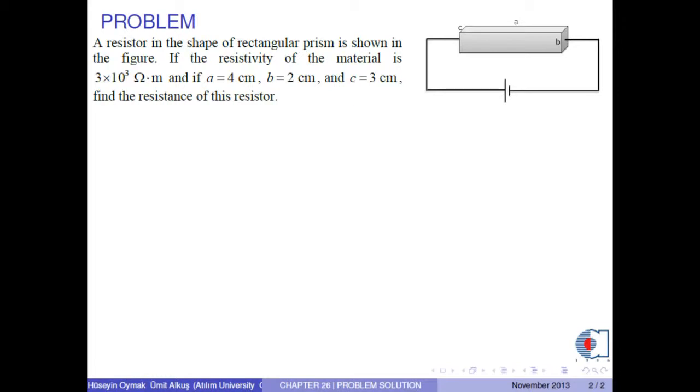A resistor in the shape of a rectangular prism is shown in the figure. If the resistivity of this material is 3 times 10 to the minus 3 ohm meters, and if a is 4 centimeters, b is 2 centimeters, and c is 3 centimeters, find the resistance of this resistor.